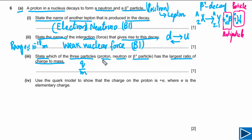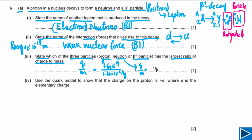For the proton, the charge is 1.6 × 10⁻¹⁹ coulombs and the mass is 1.66 × 10⁻²⁷ kg, giving us Q over M for the proton. For the neutron, Q over M equals zero because the neutron has no charge, and its mass is about 1.67 × 10⁻²⁷ kg. We can also do the same for the beta plus particle.